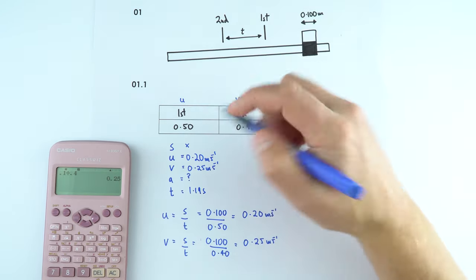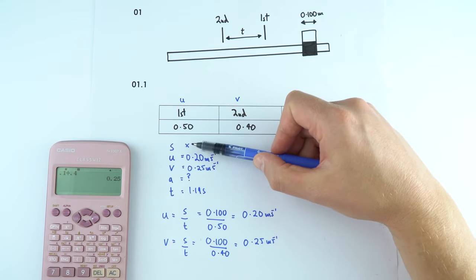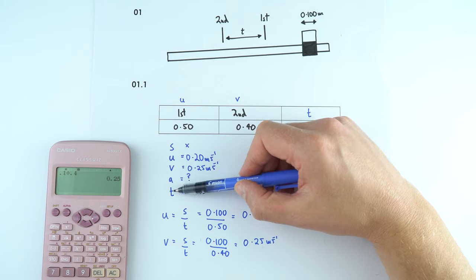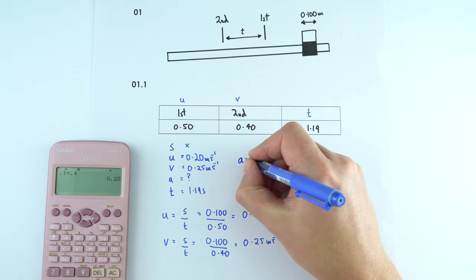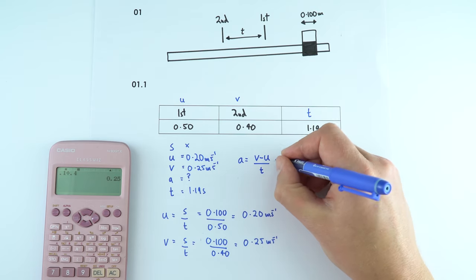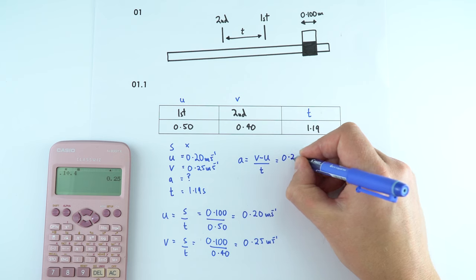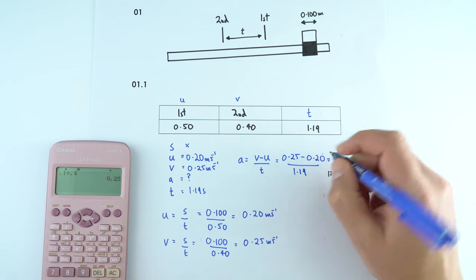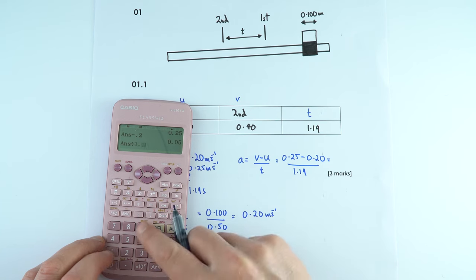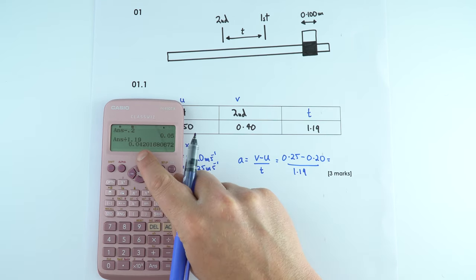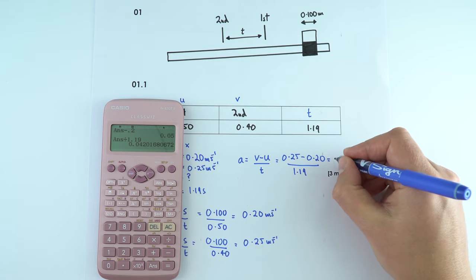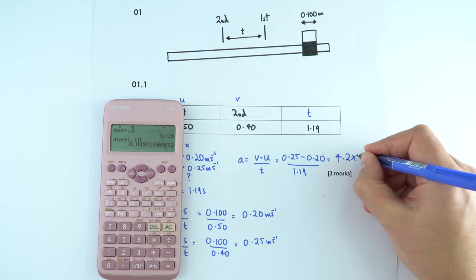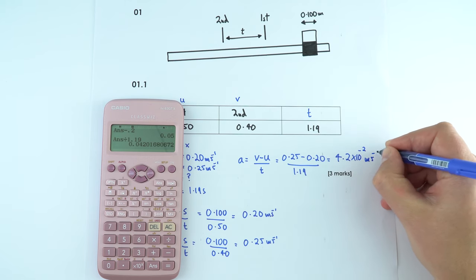Writing down SUVAT and identifying known values, the acceleration equals the change in velocity divided by time: a = (V - U) / T = (0.25 - 0.20) / 1.19 = 0.420168. Giving this to two significant figures like the raw data, in standard form that's 4.2 × 10⁻² metres per second squared.